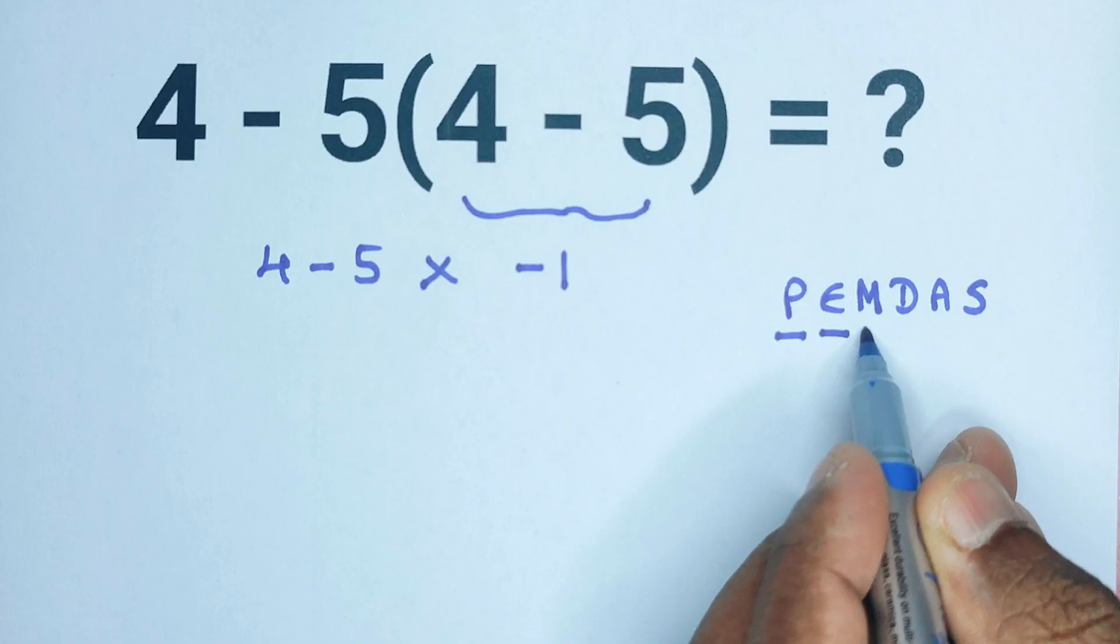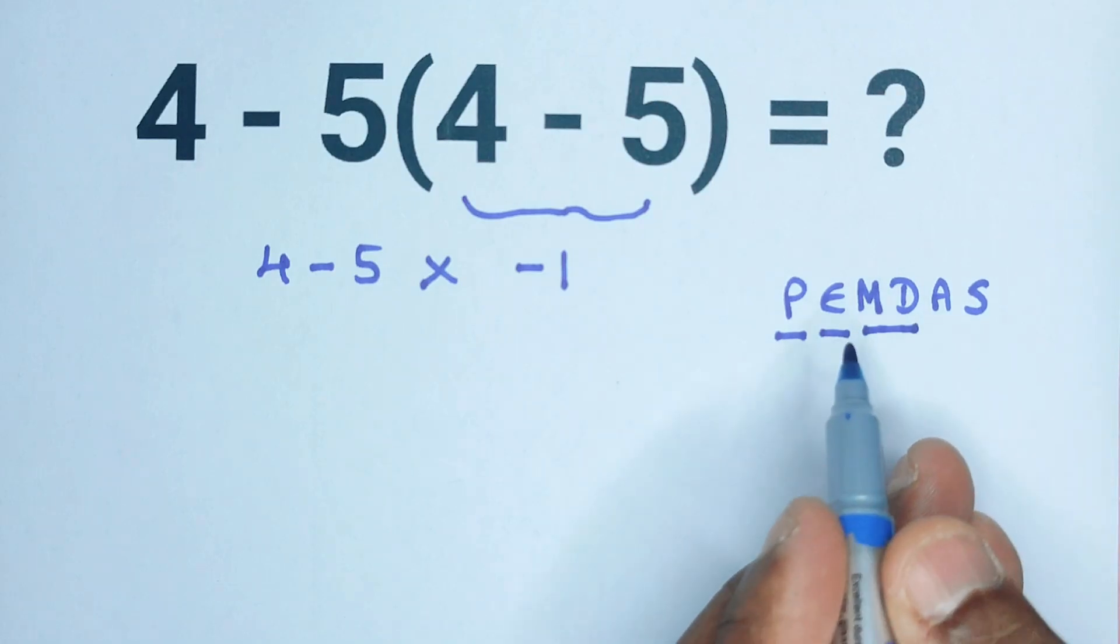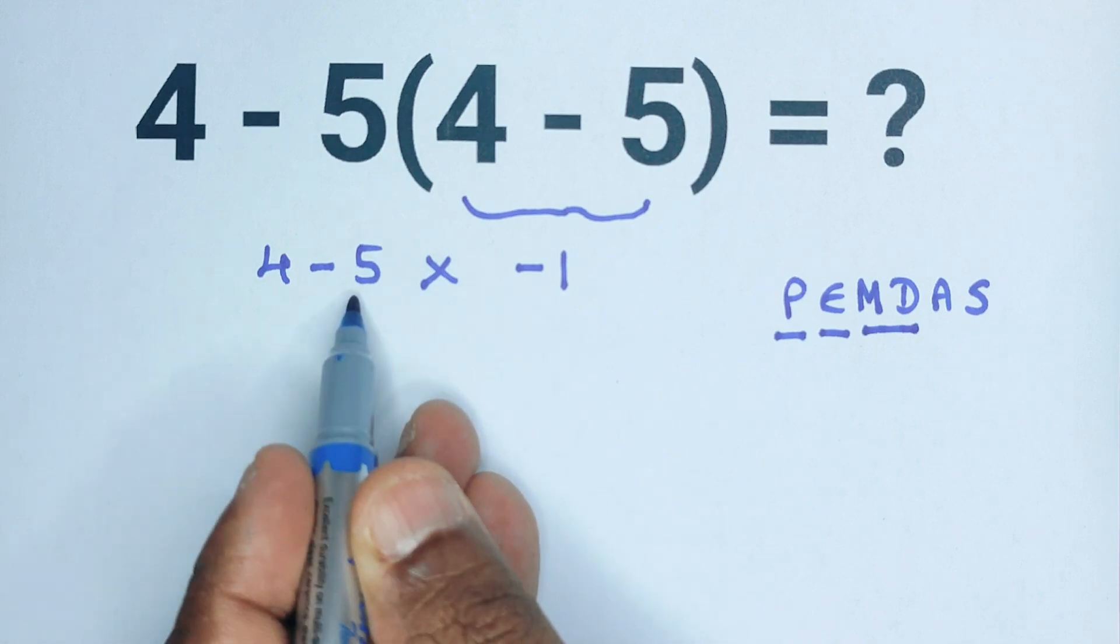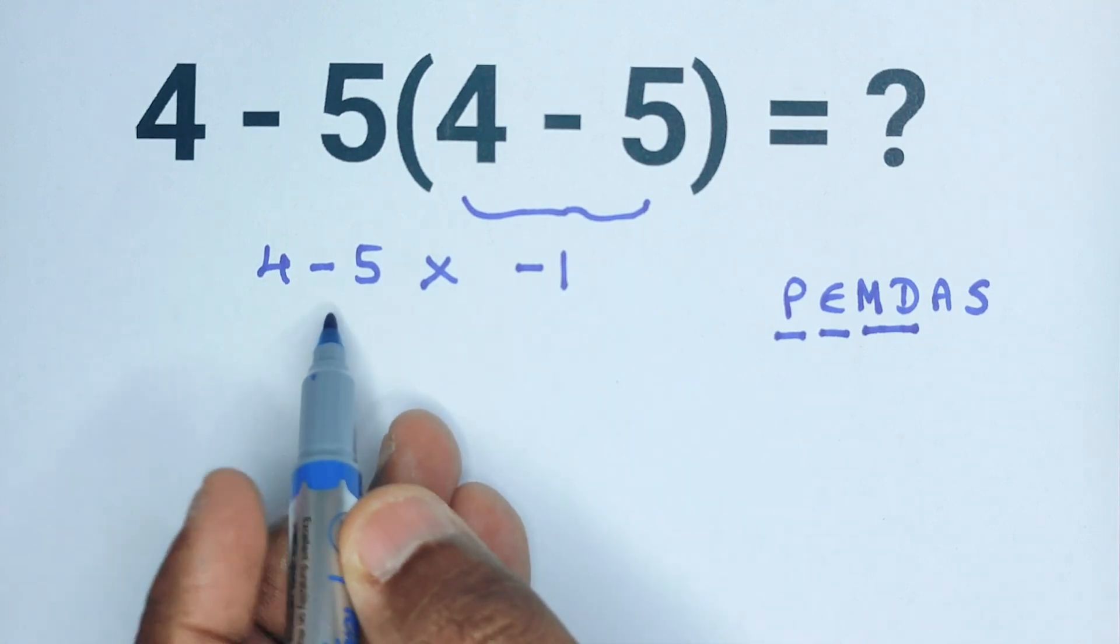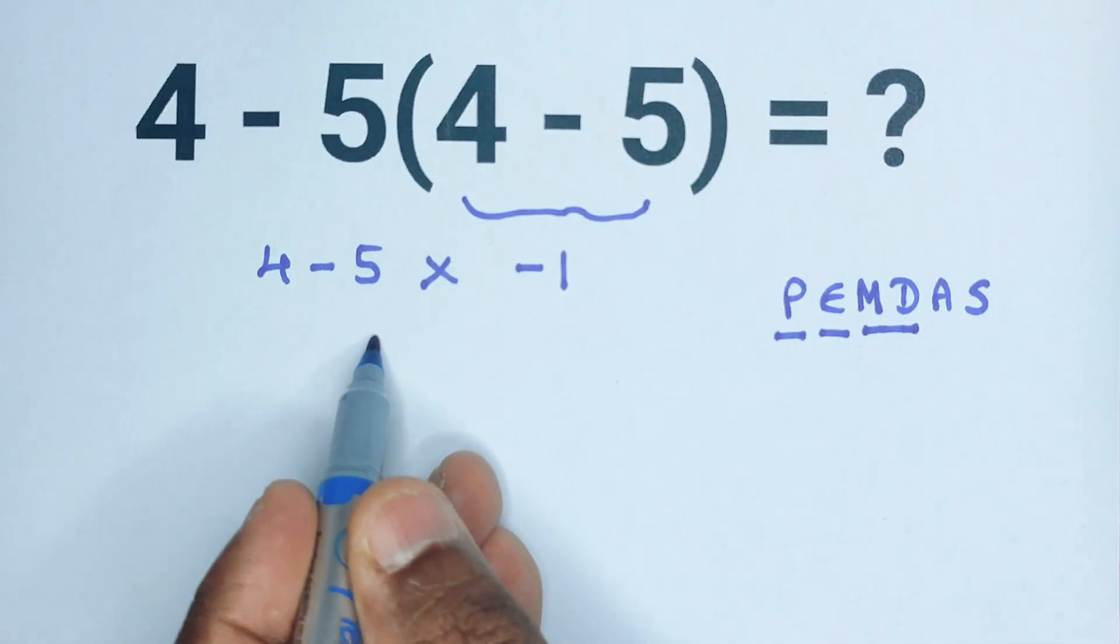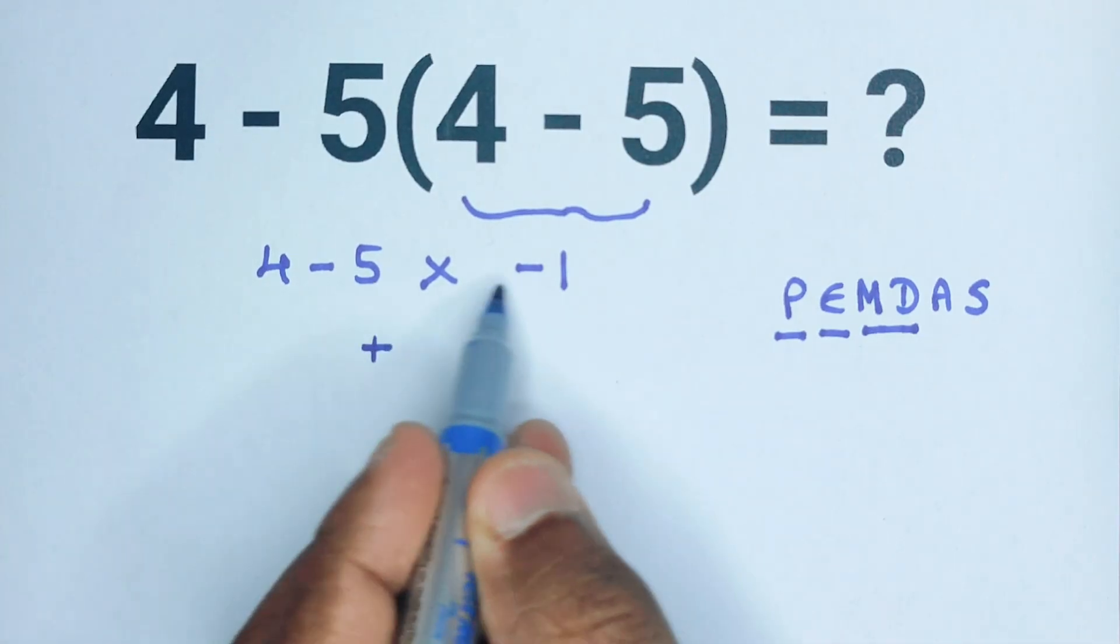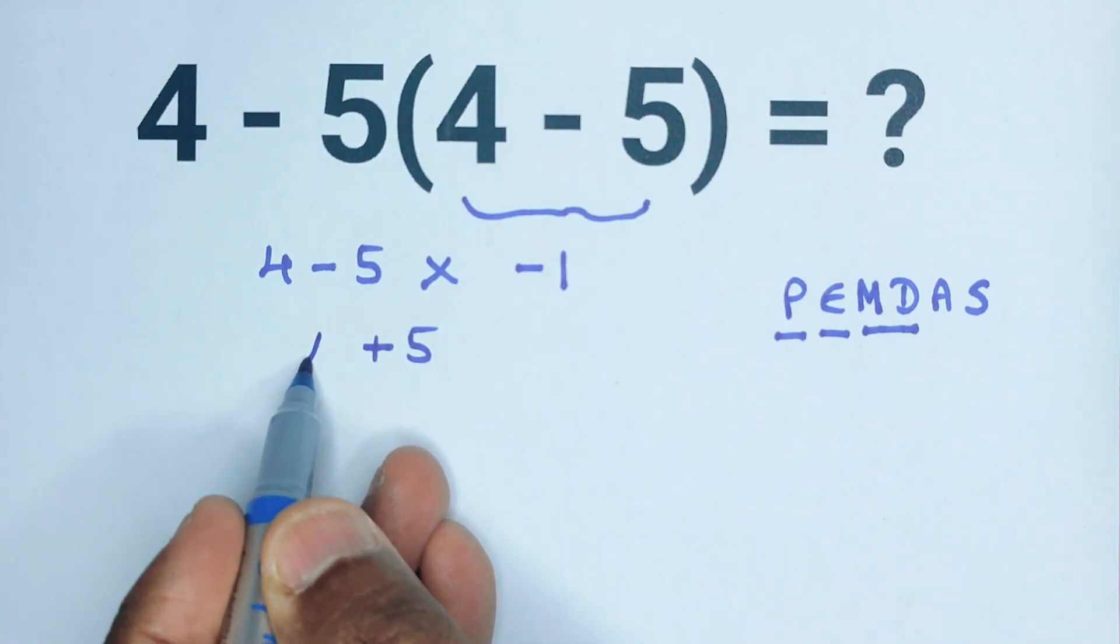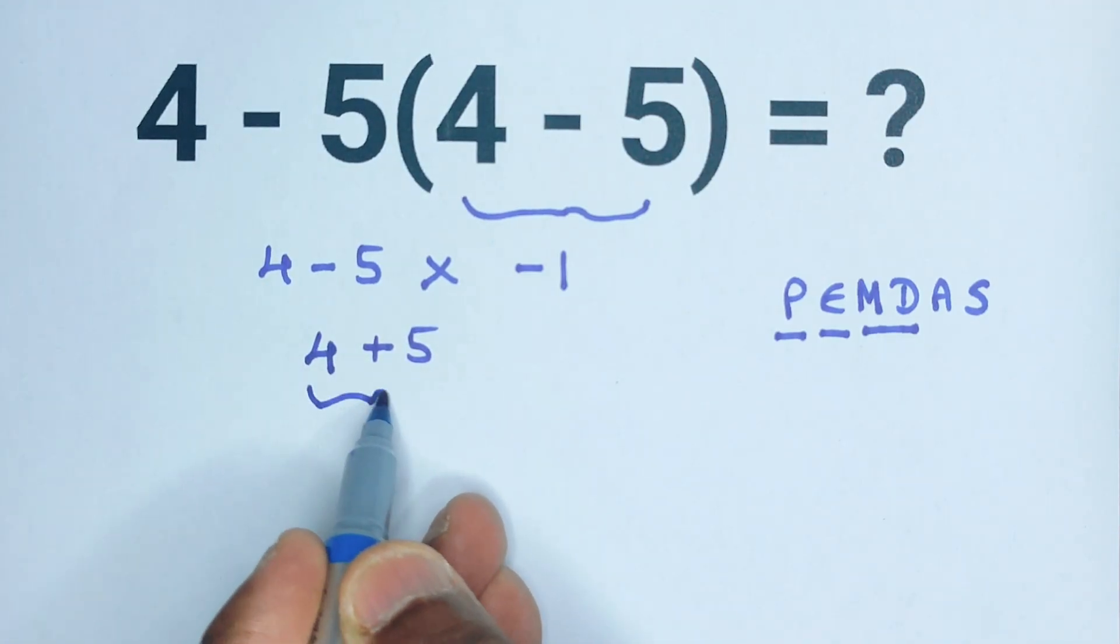Then we handle multiplication and division, and here we have multiplication: negative 5 times negative 1. We know negative times negative is positive, and 1 times 5 equals 5. Now we have 4 plus 5, which equals 9.